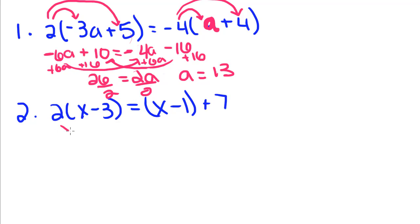Now we're going to do the same thing down here, distribute this 2, and 2x minus 6 is equal to x minus 1 plus 7. We can drop these parentheses, because we're going to collect all of our like terms anyway.